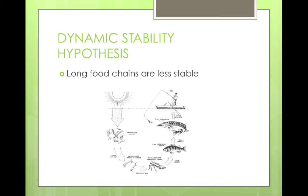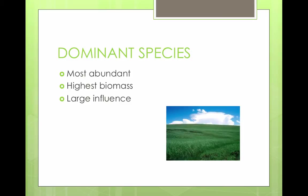Some species have more of an impact on their environment than others. Dominant species are the most abundant species in an ecosystem — they have the highest amount of biomass and the largest influence on other species. For example, in a forest, large trees dominate because they determine shade, use up nutrients, and receive a lot of light.